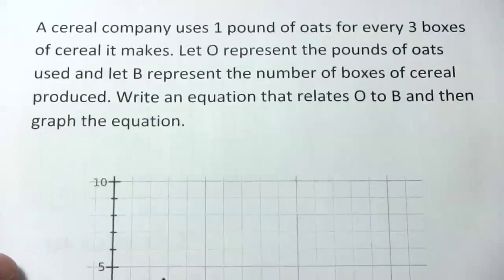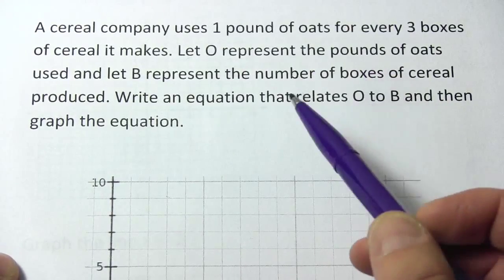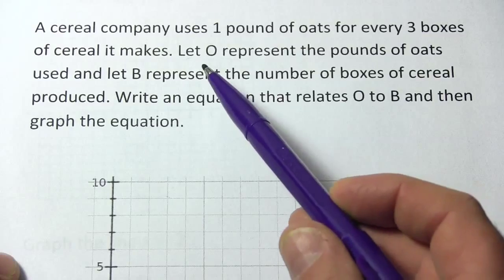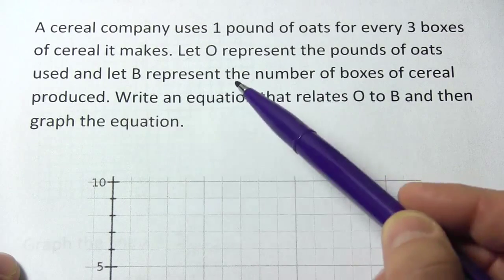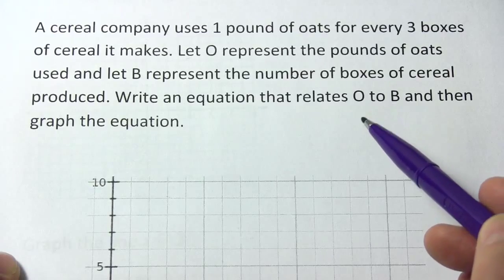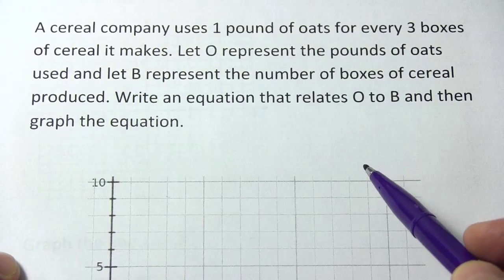So let's take a look at this. A cereal company uses one pound of oats for every three boxes of cereal it makes. Let O represent the pounds of oats used and let B represent the number of boxes of cereal produced. Write an equation that relates O to B and then graph the equation.